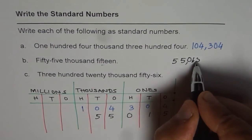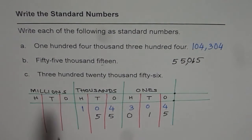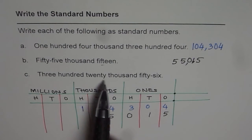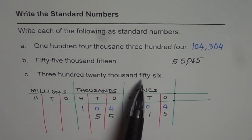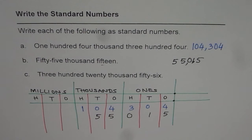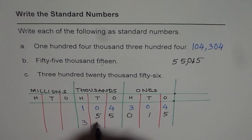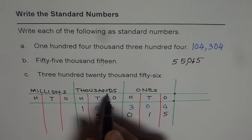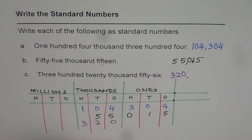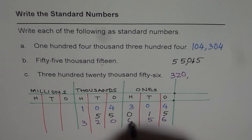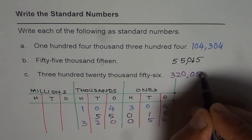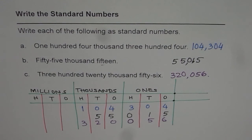The next one is three hundred twenty thousand and fifty-six. We write three hundred and twenty in the thousands group, and fifty-six in the ones group. We fill the remaining space with a zero to get 0-5-6, giving us 320,056. That is how you can write numbers as standard numbers when given in words.